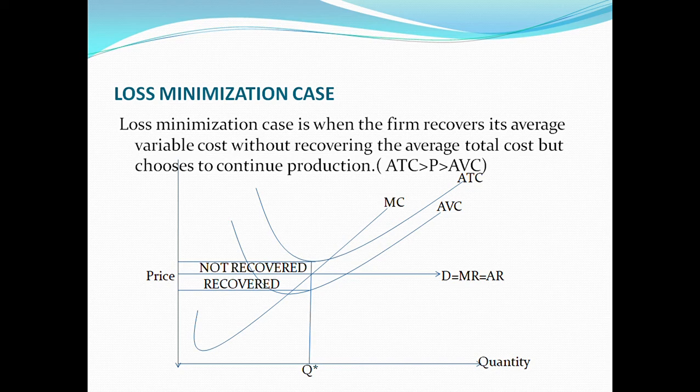Diagrammatically, we have our price on the Y-axis and our quantity on the X-axis. Our marginal cost and marginal revenue meet at this point. We determine our profit-maximizing quantity.